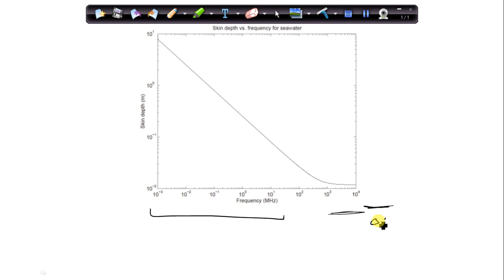And then another thing we can say about this is that as the frequency goes up, the wavelength goes down. And so if the skin depth remains constant, as the wavelength gets smaller and smaller, the number of wavelengths that the wave can go into the material increases.